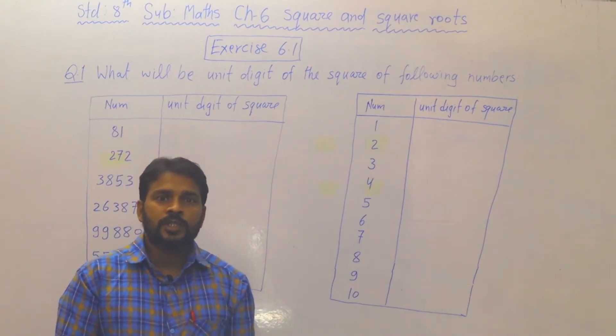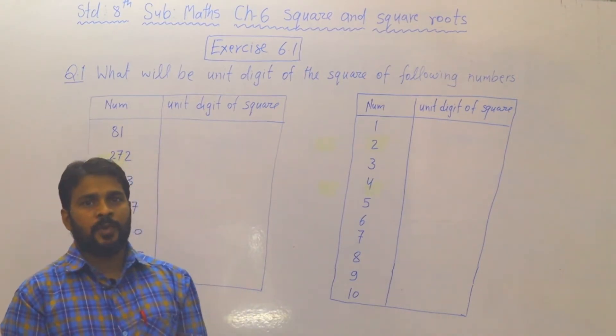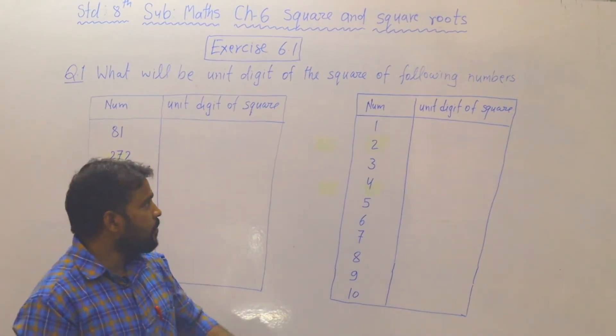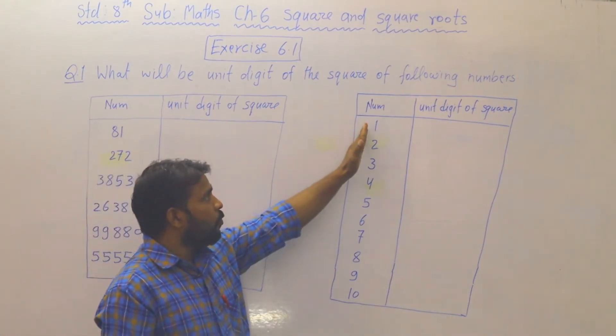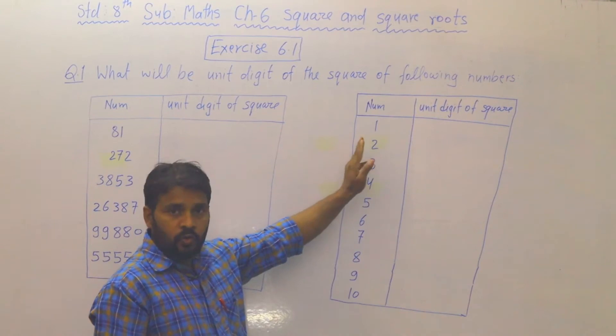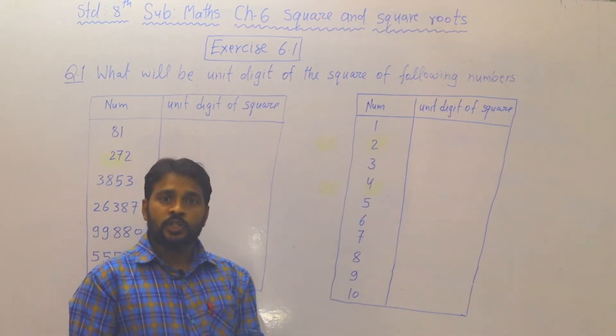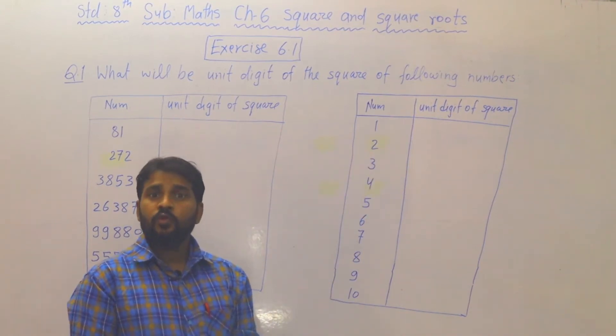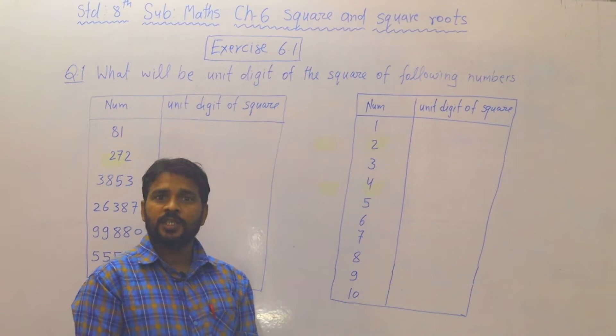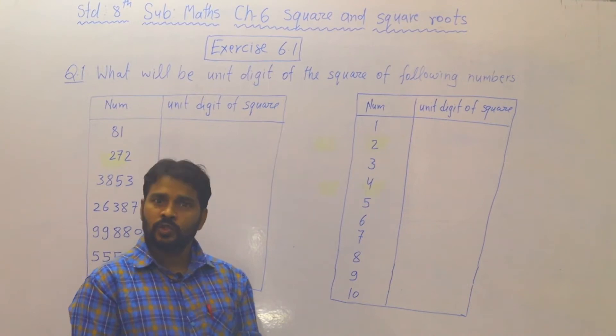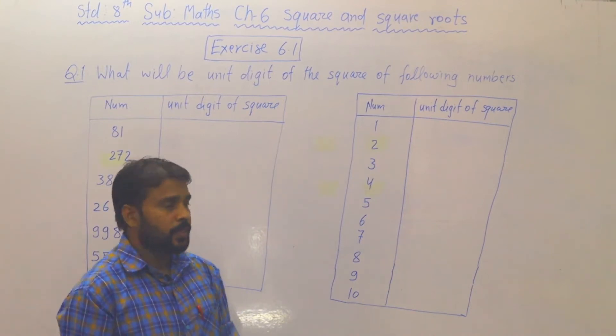तो दोस्तों, इस question को solve करने से पहले, सबसे पहले हम 1 से 10 तक का square करेंगे और उसमें unit digit क्या आती है वो हम देखेंगे.